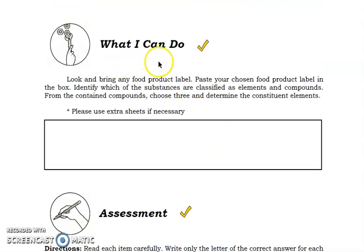For the seventh activity, what I can do. You're going to look and bring any food product label. Paste your chosen food product label in the box. Let us see, for example, the food label of a junk food. You're going to cut those parts, the part which shows the nutritional facts and the ingredients. Then paste it on your paper. And then look on the ingredients. Write down what are the substances classified as elements and compounds. And then once you already identified the compounds, you're going to choose three and determine what are the elements composing the compounds that you have written down. That is for the what I can do.